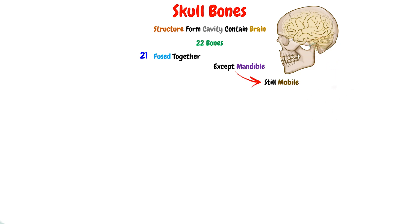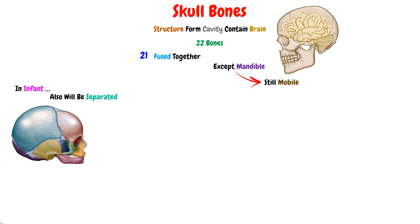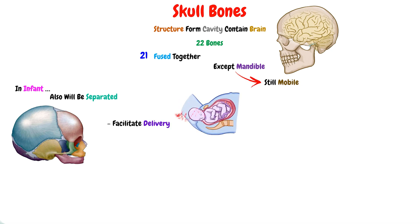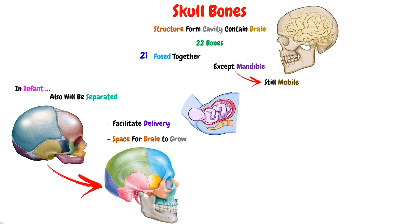Those 21 bones in an infant will also be separated — that means they aren't fused yet. This separation is extremely important in infants in order to facilitate the delivery and the head exiting from the mother. And also, there will be a space for the brain to grow comfortably. But when this baby gets older, these separated bones will fuse together in order to give the strength to protect the brain from any danger.